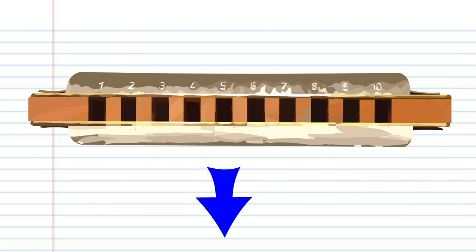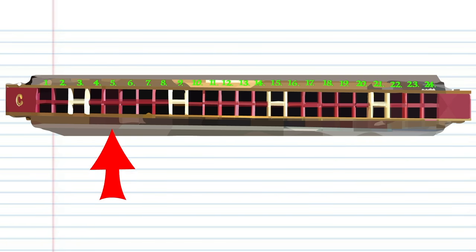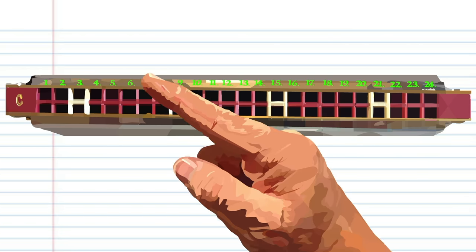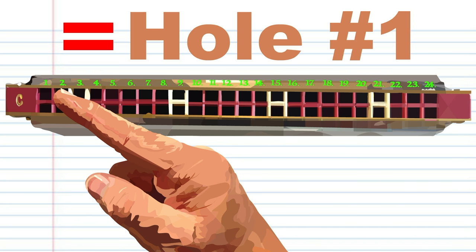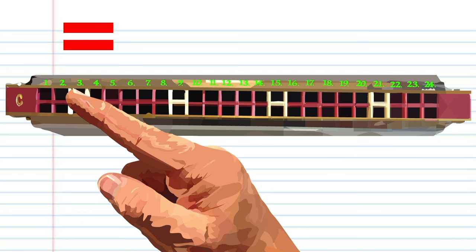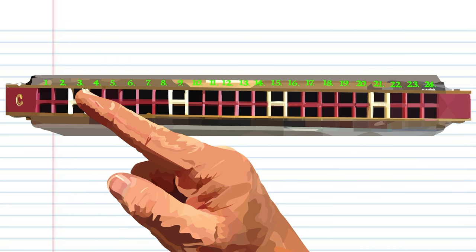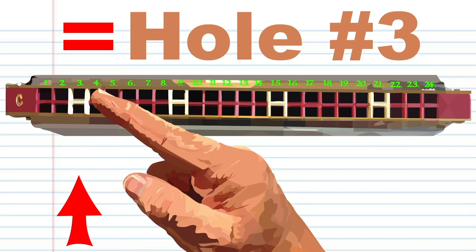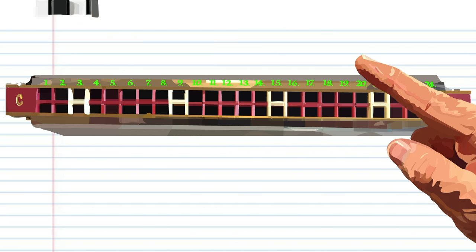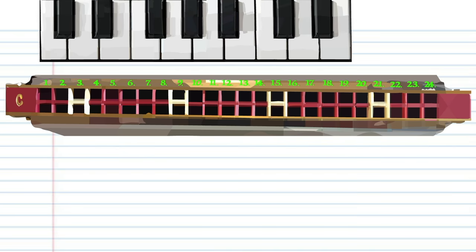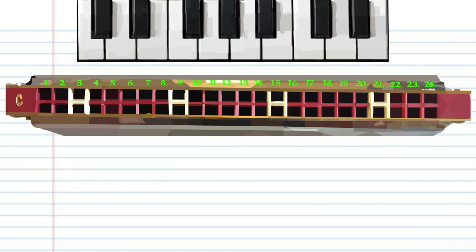Now unlike the diatonic harmonica, each hole is either a blow or a breathe hole and will typically only produce one note. The hole that produces the lowest tone is hole number one, the hole next to it number two, and so on. But you'll notice that they didn't exactly make a scale. So let's take a look at each hole and see what the tones actually are.